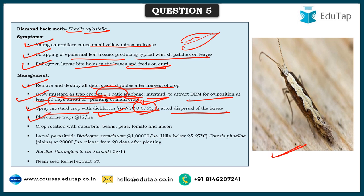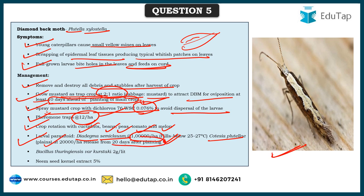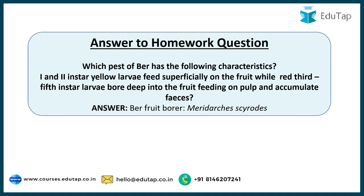Additional management for diamondback moth: install pheromone traps at 12 per hectare to attract adults; practice crop rotation with cucurbits, beans, peas, tomato, and melon to cut the life cycle. Release larval parasitoids — Diadegma semiclausum at 1 lakh per hectare and Cotesia plutellae, used in hills, while Cotesia can be used in plains — releases should be done 20 days after planting. Bacillus thuringiensis var. kurstaki at 2 grams/liter or neem seed kernel extract 5% can also be sprayed.